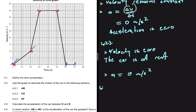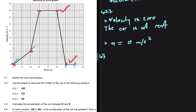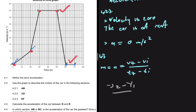For 4.3, we calculate the acceleration of the car between D and E. There are two ways to do this: using the gradient of the velocity-time graph, or using equations of motion. The gradient of a velocity-time graph equals the acceleration: that is V final minus V initial divided by time final minus time initial — the same as V2 minus V1 over T2 minus T1, which is what we use in math to find the gradient.